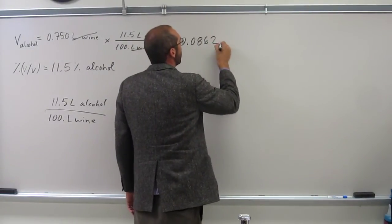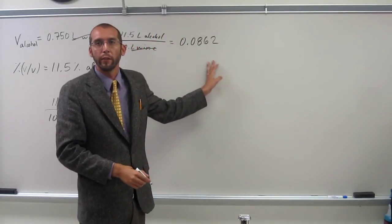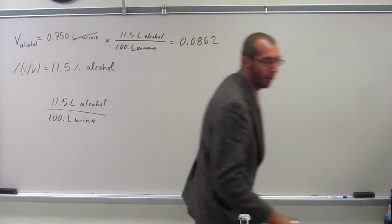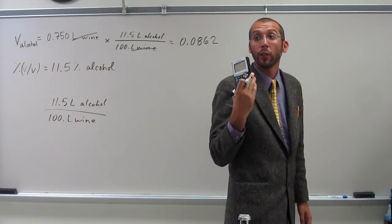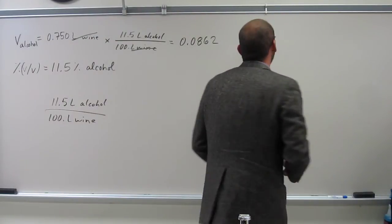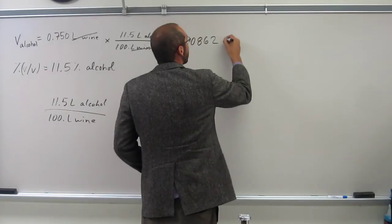Well, this is one of those ones that does that weird rounding behavior. 862, because remember, when it's only the five after it, it goes always to the even number. So, 0.0862 liters, right?